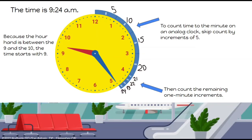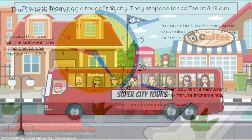Tell students that 9:20 has been represented. Ask students: what strategy could be used to count the remaining minutes? We could count by 1s. Using the same model clock, show students how to count the remaining minutes until 9:24 is shown. Tell students that once the additional minutes have been counted, the clock now represents 9:24.